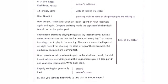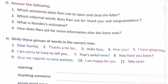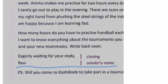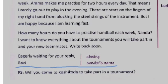Make sure to start writing the letter from the left margin of the page. So after this, in question number G, some questions are asked from the perspective of the above letter. Question number 1: Which sentences does Ravi use to open and close the letter? The answer is, Ravi used the sender's address, which is B14 Link Road, Kozhikode, Kerala, to open the letter, and to close the letter, the sender's name has been used.